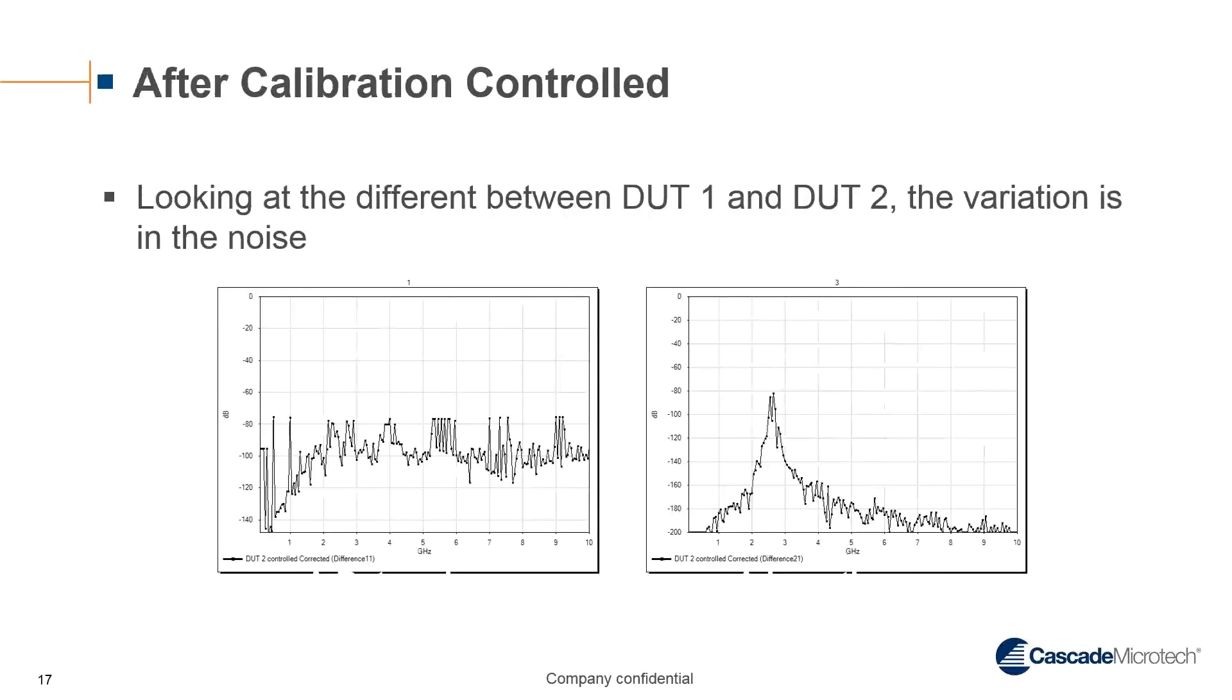After calibration in the control scenario, where every site was being short open load or through during the calibration, we then looked at the delta between the final device measurements. We primarily looked at S11 and S21 for these differences, and as you can see, the measurement differences were basically in the noise. For the insertion loss, the difference between them was less than minus 80 dB, and the return loss was better than minus 70 dB, which means that in a final test setup, you would not need to do correlation between site 1 and site 2, since they are basically identical.